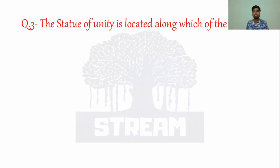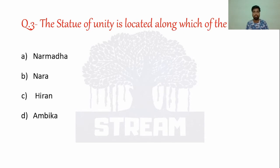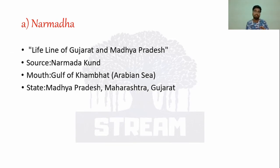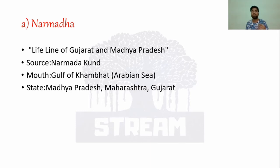Current Affairs Question 3: The Statue of Unity is located along which river? The answer is option A — the Narmada. The Narmada originates in Madhya Pradesh, flows through Maharashtra, and then through Gujarat before entering the Arabian Sea via the Gulf of Khambhat. The Statue of Unity is located along this course of the Narmada river in Gujarat.